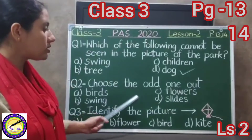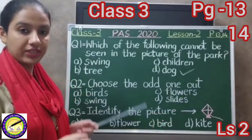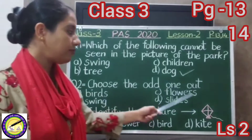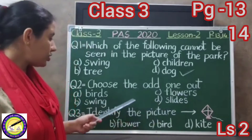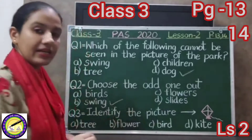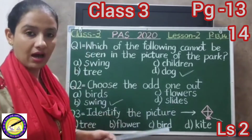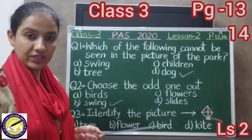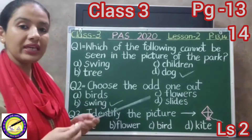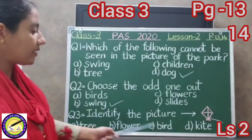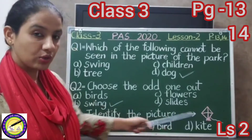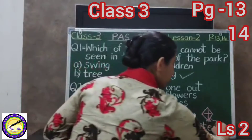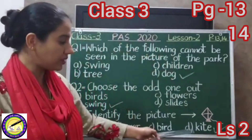The second question is: choose the odd one out. Swing is the correct answer because all the other three options are plural nouns. The third question is: identify the picture. Look at the options — tree, flower, bird, or kite. Yes, this is the picture of a kite, so we will take option D.